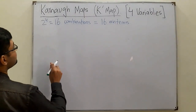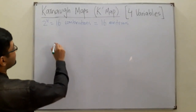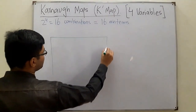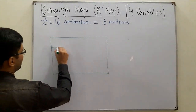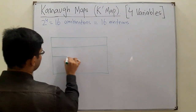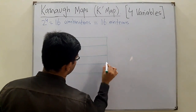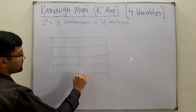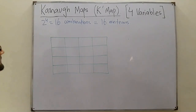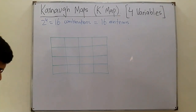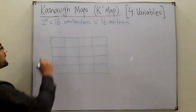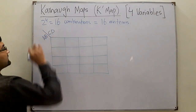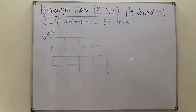We draw 16 cells — four in each row and four columns, giving us a 4x4 grid of 16 blocks. We have four inputs, so we draw a line with A and B on one side, and C and D on the other side, then assign their combinations.